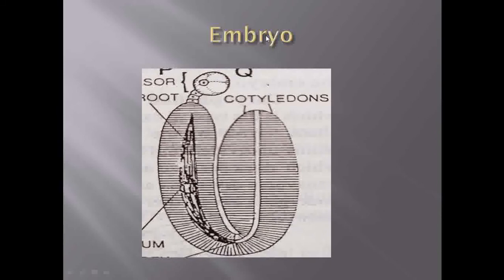Let us look at the typical structure of an embryo. This is a dicot embryo. It shows presence of suspensor cells, two cotyledons, the plumule, and the radicle. This is the typical structure of an embryo.